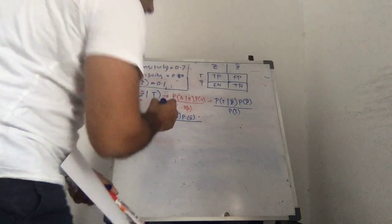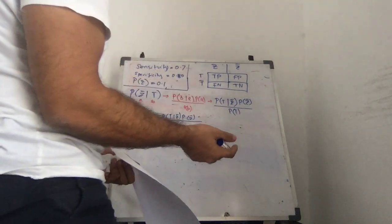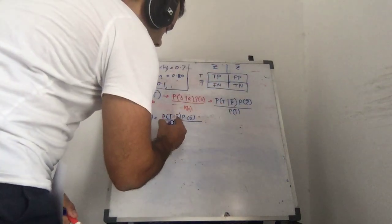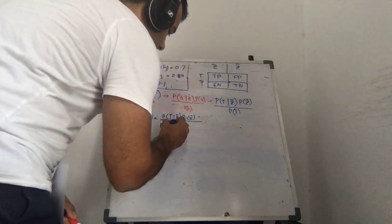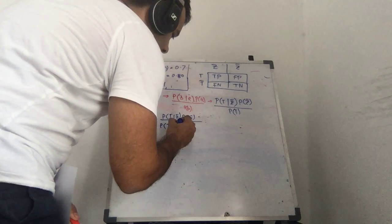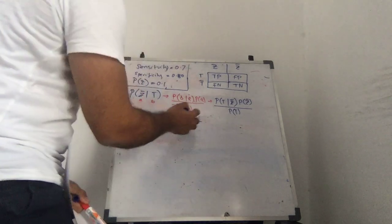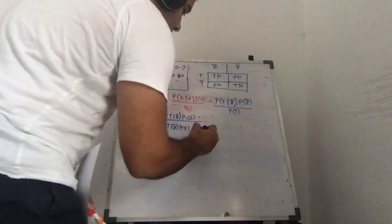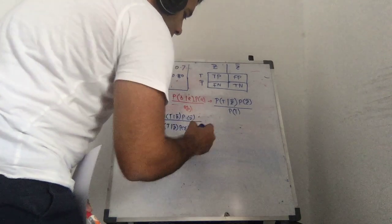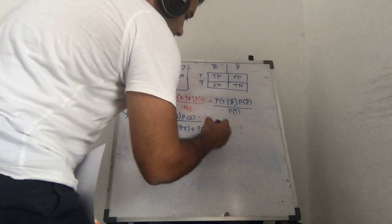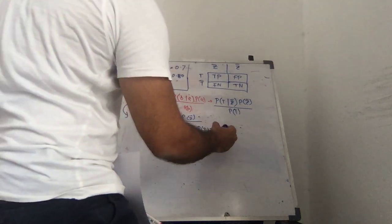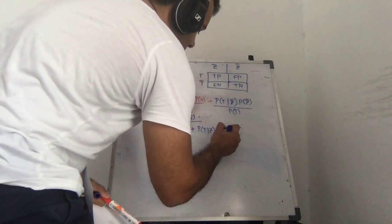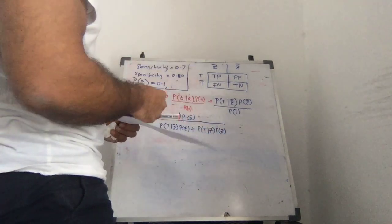So probability of test is positive and someone actually doesn't have the disease, which is basically this up here, right? Times the probability of actually not having the disease plus the probability that someone has the disease and the test says, yep, they do, times the probability of Z. That makes sense to just split this up.